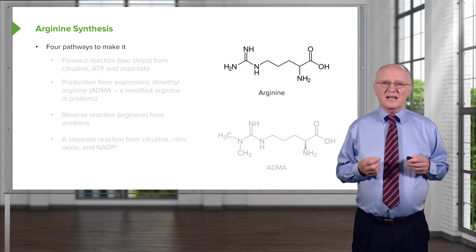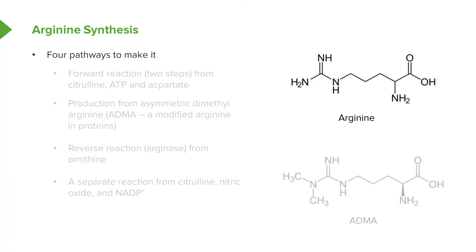Arginine is an amino acid that can be made in multiple ways. As we will see in the urea cycle, arginine is a very important central molecule for doing a variety of things. There are four ways to make arginine. The first is a forward reaction that takes two steps coming from citrulline, ATP, and aspartate — a process that occurs in the urea cycle in its normal direction.